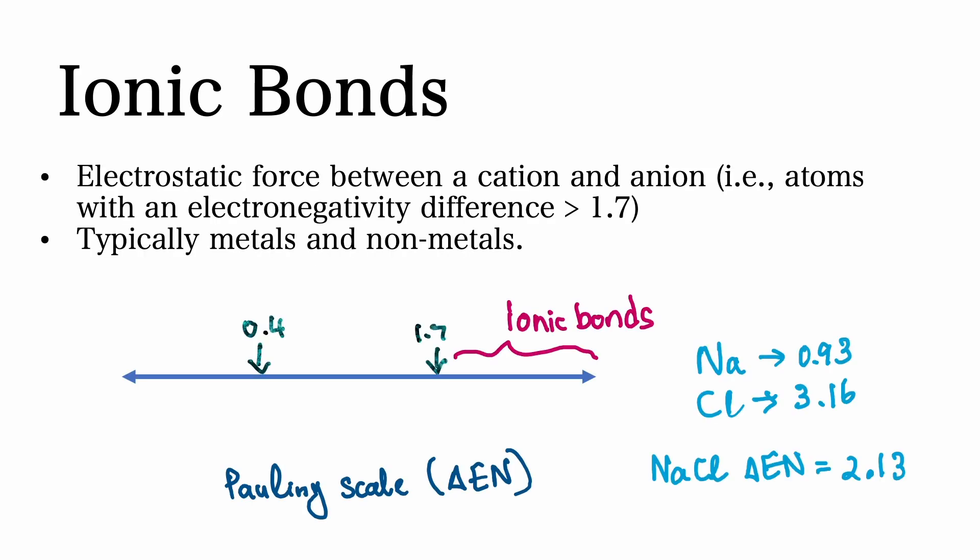Ionic bonds form between a cation and an anion. These atoms have an electronegativity difference of more than 1.7 as indicated by the Pauling scale shown below. You can normally identify these bonds by observing if the compound is made up of a metal and a nonmetal. Consider sodium chloride as an example. The Na+ cation from the sodium metal and Cl- anion from chlorine nonmetal have ionic bonds between them.